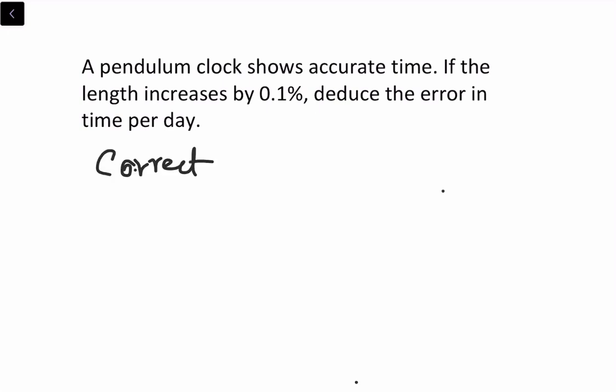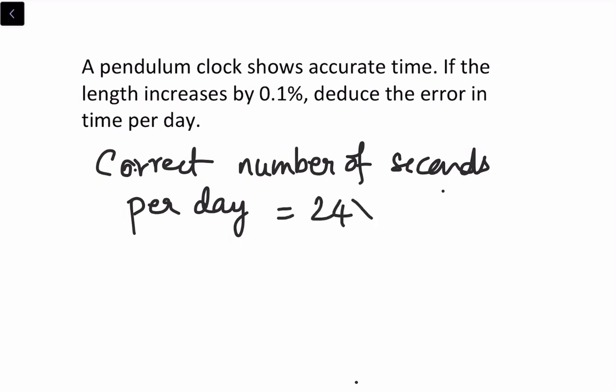Per a day, the correct number of seconds per day is equal to 24 hours into 60 minutes into 60 seconds. That comes around 86,400. So let us take it as nu.